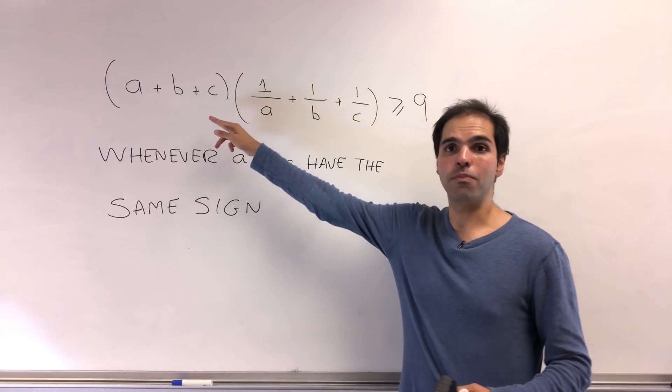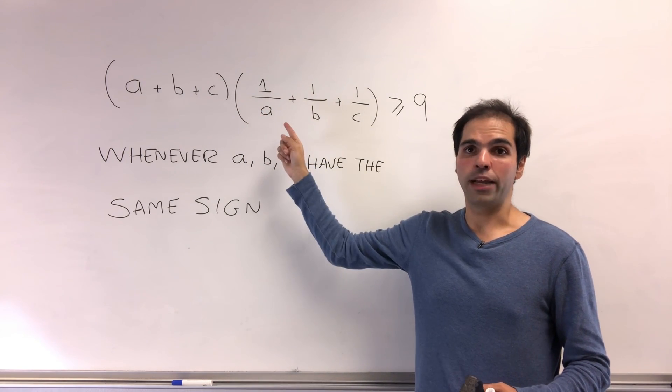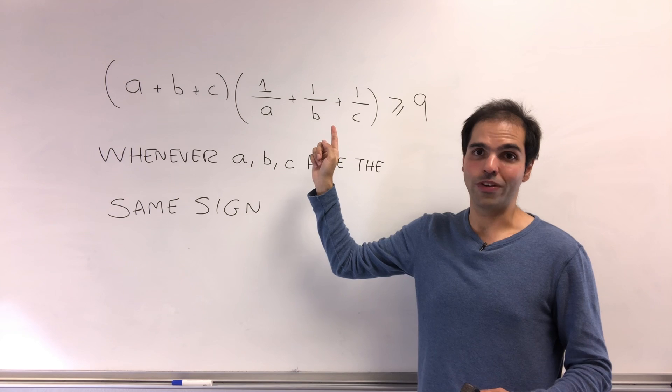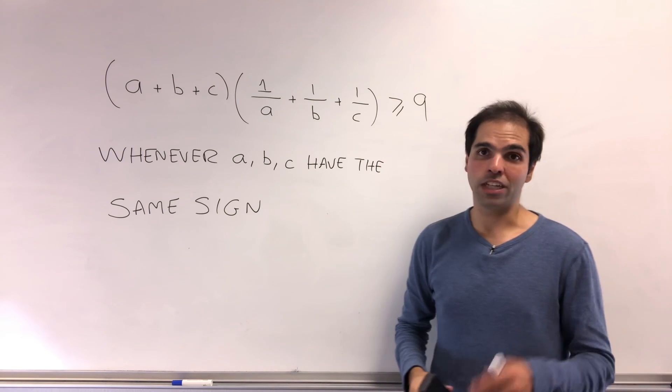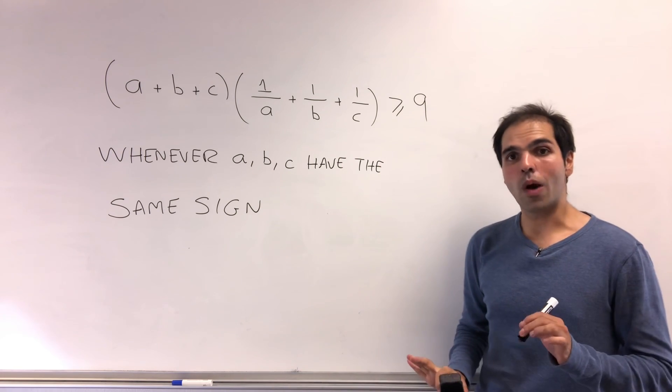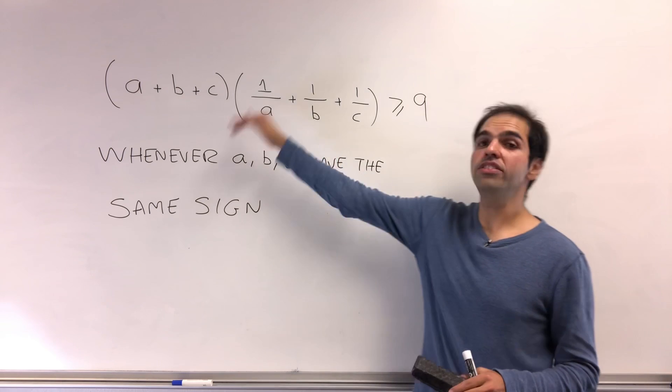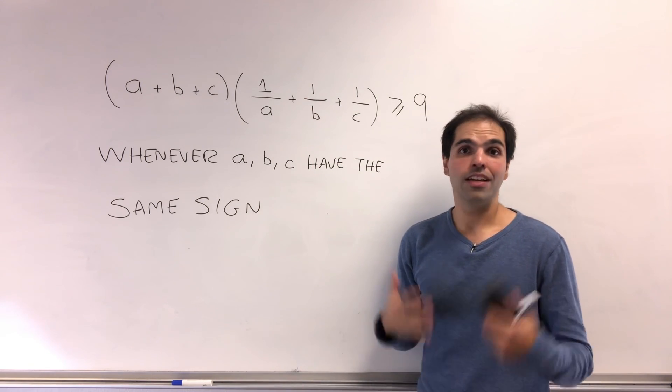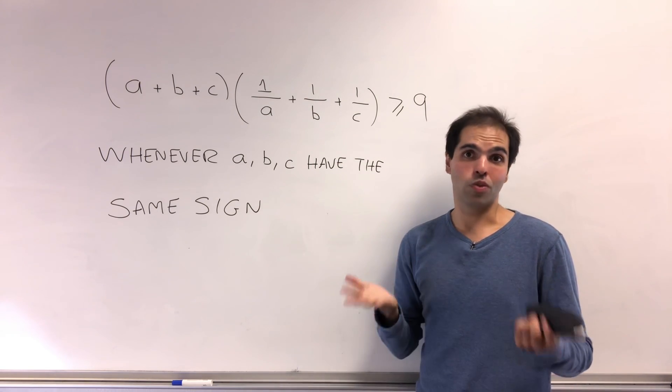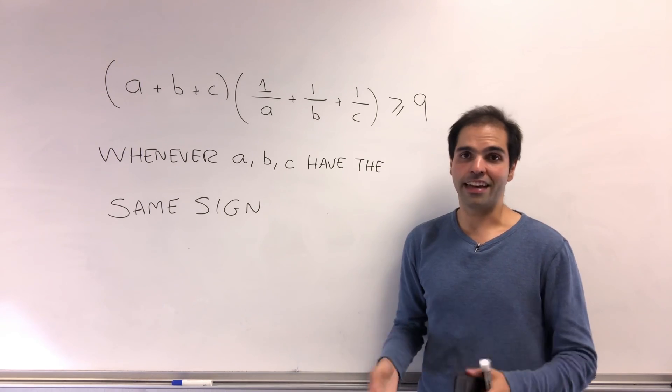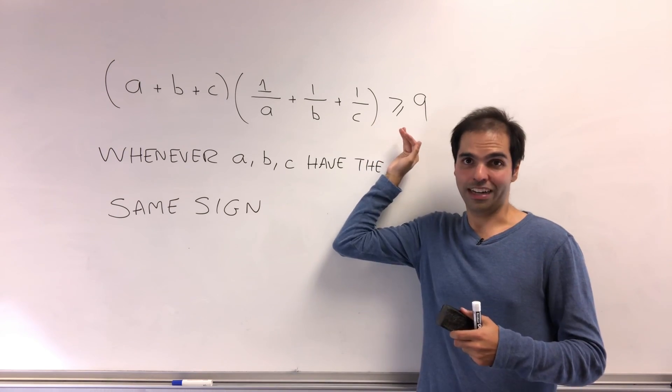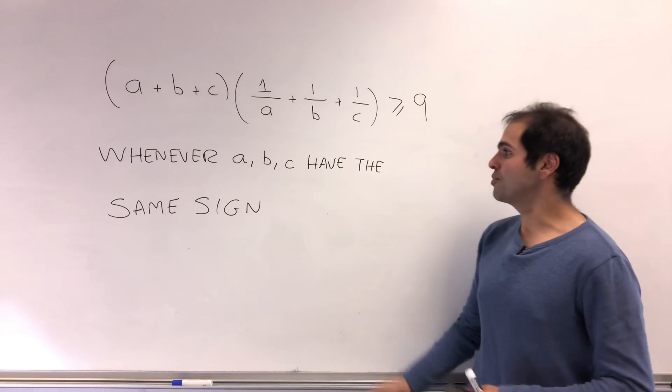Show that (a + b + c)(1/a + 1/b + 1/c) is always greater than or equal to 9. Which is quite surprising, because if you naively expand this out, you would find that it's greater or equal to 3, but it turns out we can do better than that. We can show it's greater or equal to 9. How do you do this problem?